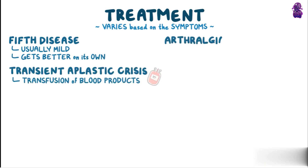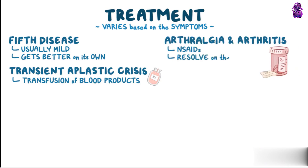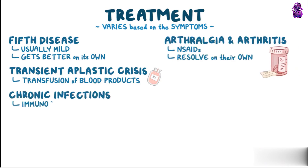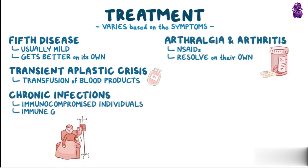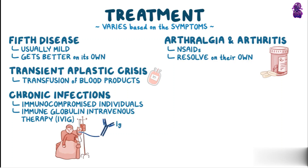Arthralgia and arthritis are treated with NSAIDs and usually resolve on their own. Chronic infections in immunocompromised individuals are treated with immunoglobulin intravenous therapy, or IVIG, which involves giving antibodies — mostly immunoglobulin G — taken from donor blood plasma.